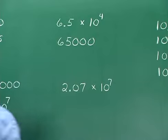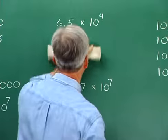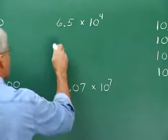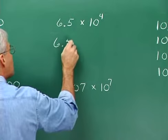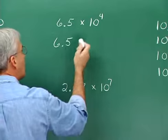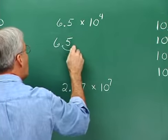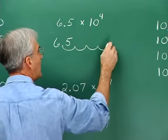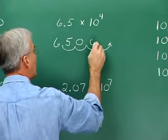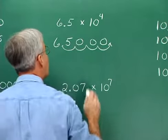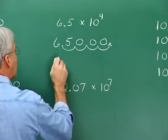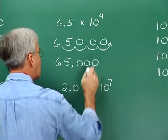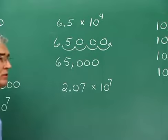Another way to look at it: we're taking 6.5 and sliding the decimal four to the right — one, two, three, four. The decimal ends up here and we need placeholders for these values, so it turns out to be 65,000.